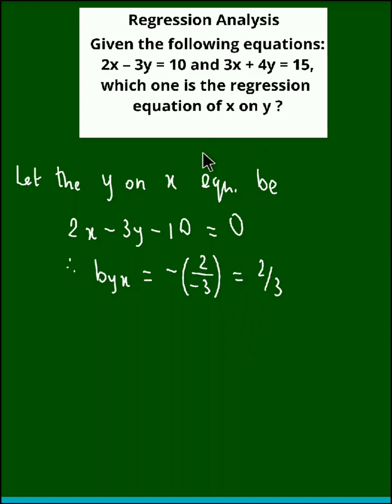Now let the second equation be x on y. Let the x on y equation be 3x plus 4y minus 15 equal to 0.